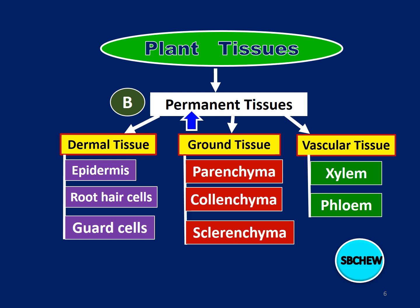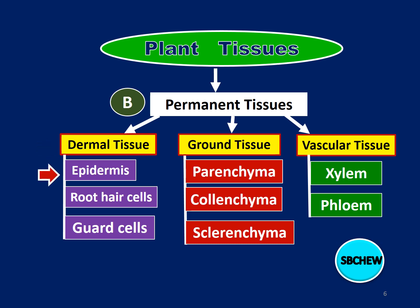Zooming in on the permanent tissues, which comprises the dermal tissue, ground tissue, and vascular tissues. We will start to discuss the types of tissues here, starting with the dermal tissue, which comprises the epidermis and specialized cells such as root hair cells and guard cells.